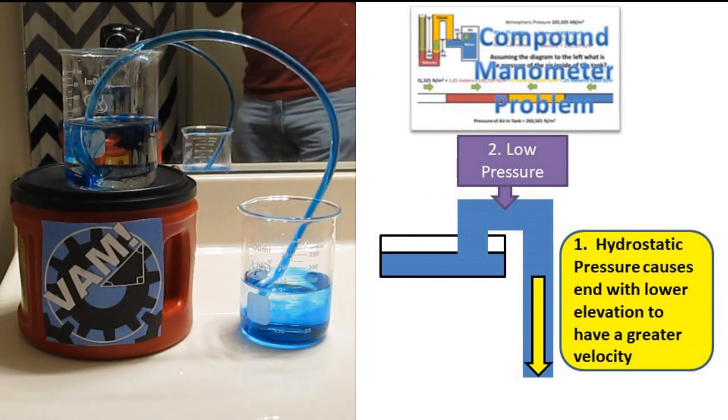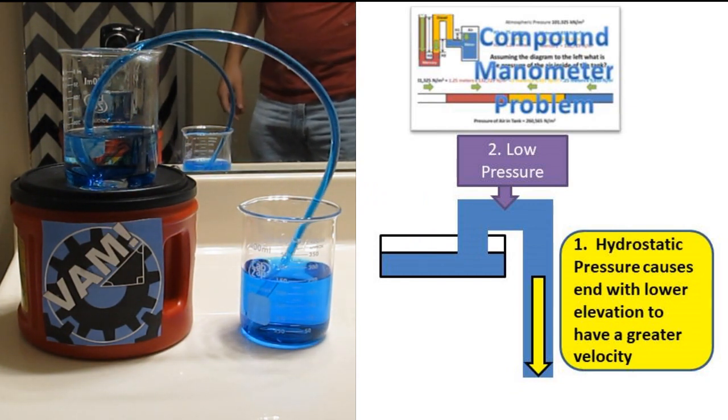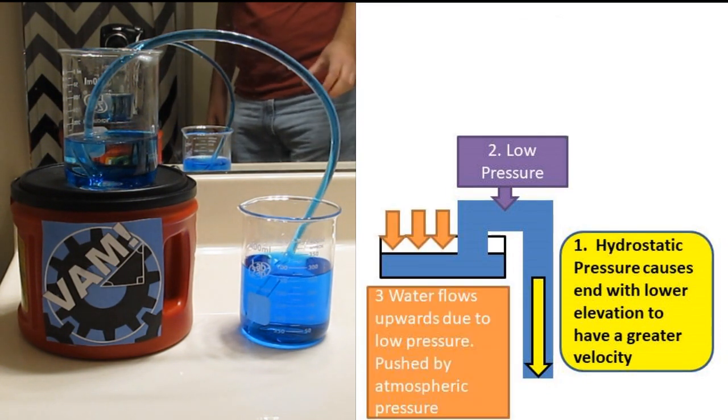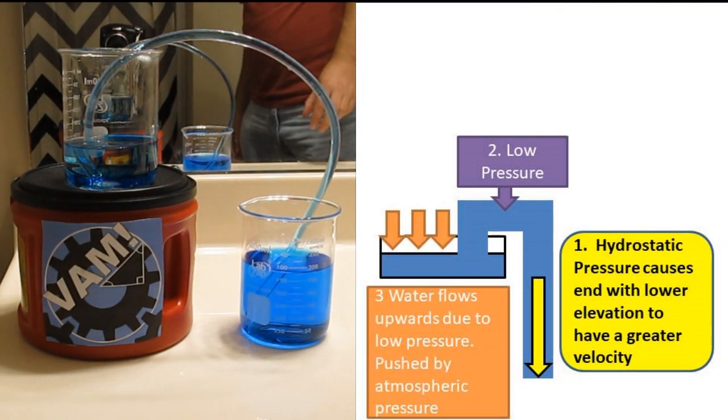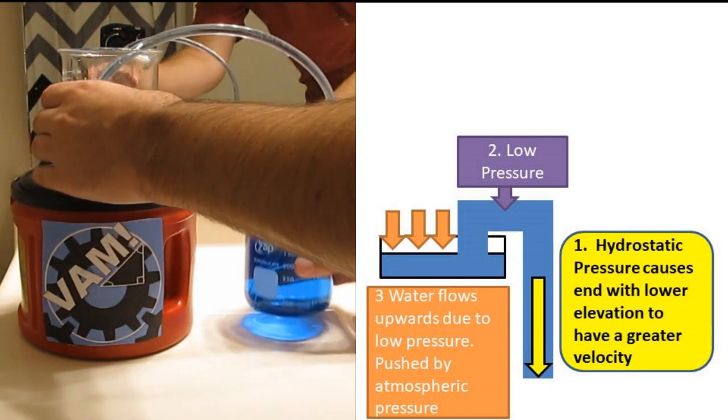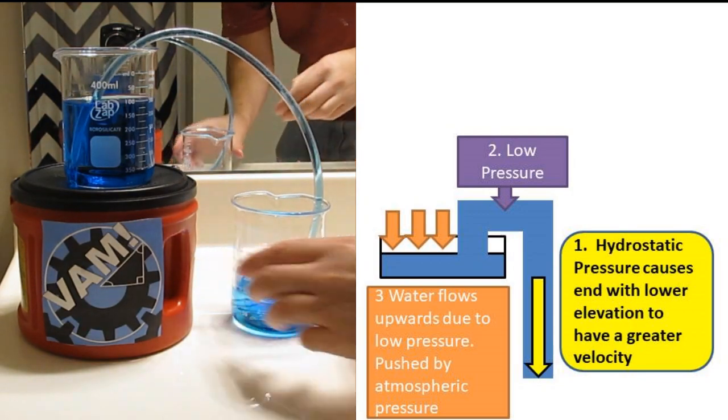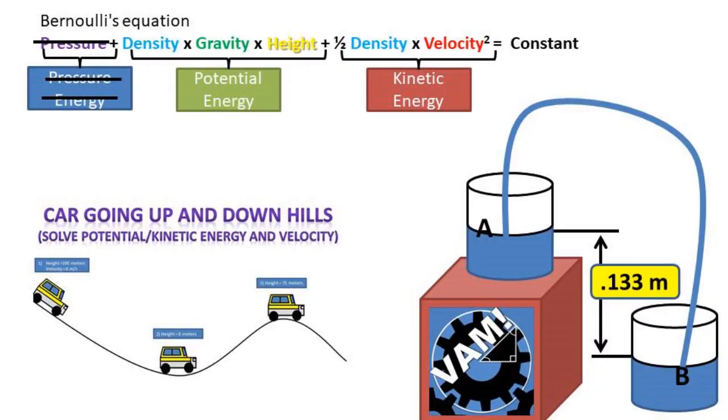This causes a reduced pressure at the top of the siphon. You can think in terms of the manometer problems we previously completed. Water then flows upwards due to low pressure. The pressure at the top of the tube is lower than atmospheric pressure. The atmospheric pressure acting on the top reservoir is pushing the water up the tube.